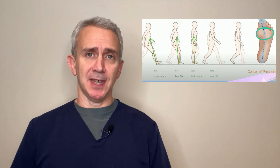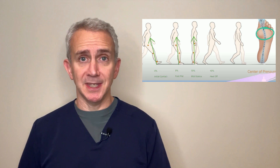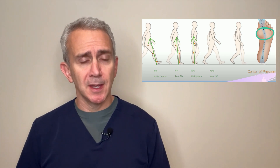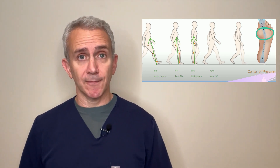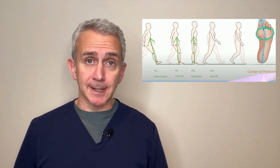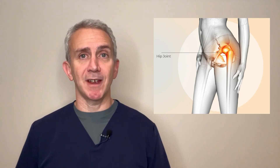Think of it this way. With every step that you take, there's a force that's going to go up through your heel to your ankle, knee, hip, and spine. As that force passes to your hip, if the muscles contract properly and are strong enough, then those muscles will take the force onto themselves. But if the muscles are weak or they're too tight, then the force is still going to pass through the hip, and that force from the heel strike is going to pass directly through the joint and contribute to irritating it and degrading it further.